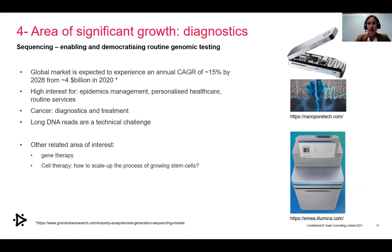Another area that is booming is sequencing, again linked to the pandemic — it's a billions of dollars market. Technical challenges include reducing the cost significantly, providing long DNA reads, and remote capabilities including connectivity, power, and energy. One interesting application on the side is cell therapy. Apparently there is a major issue with scaling up the process of growing stem cells, so graphene can potentially solve that — and that's a huge opportunity.